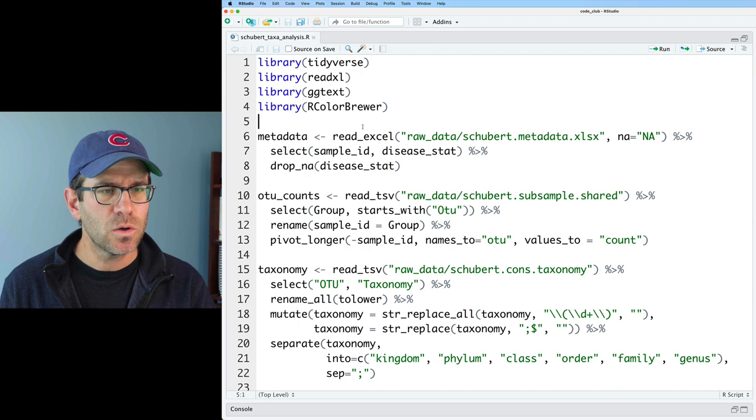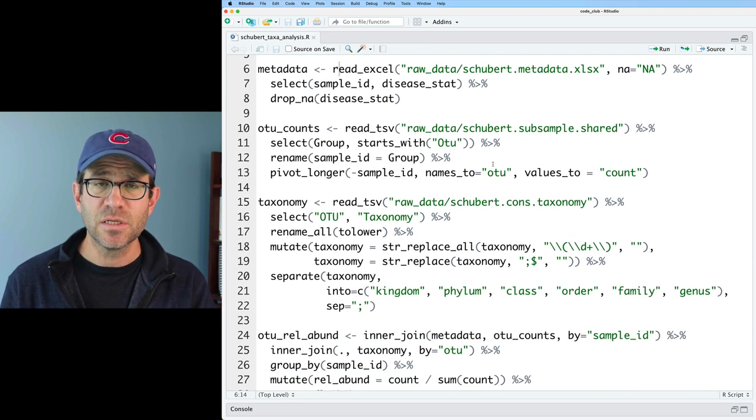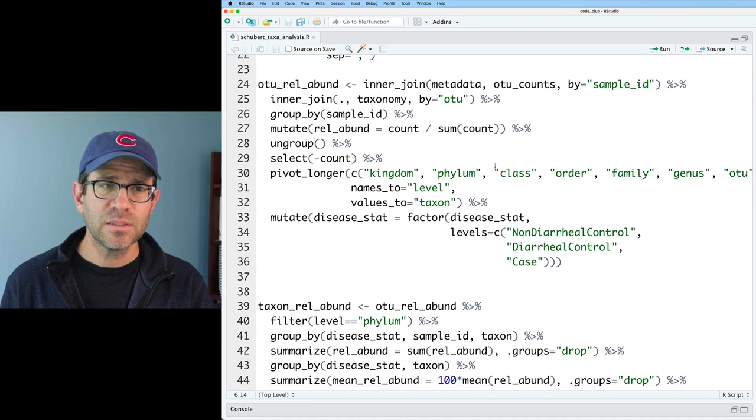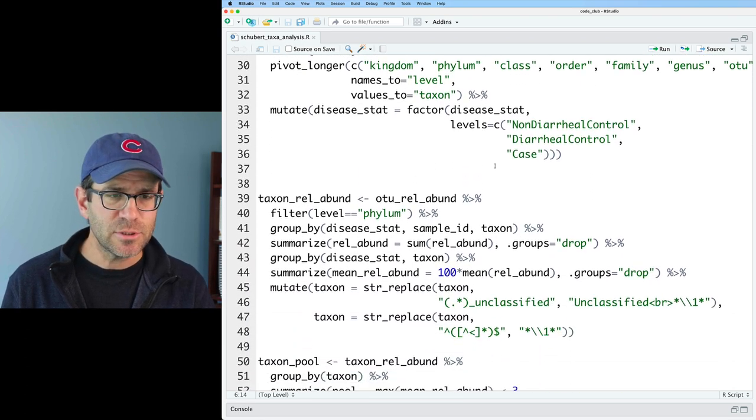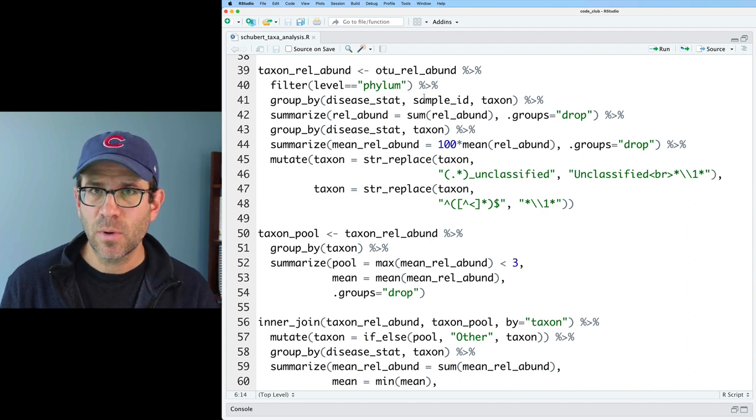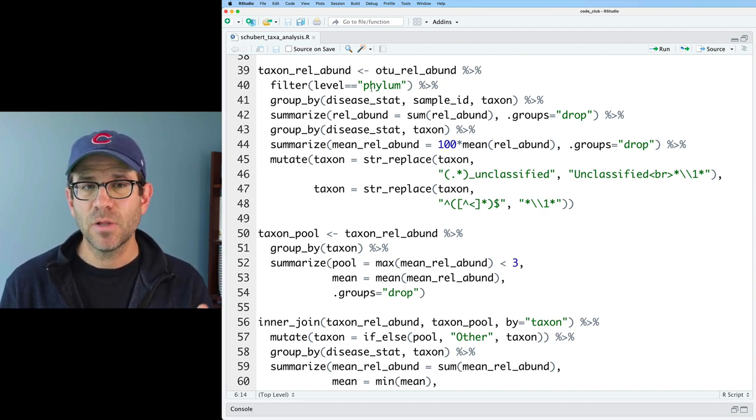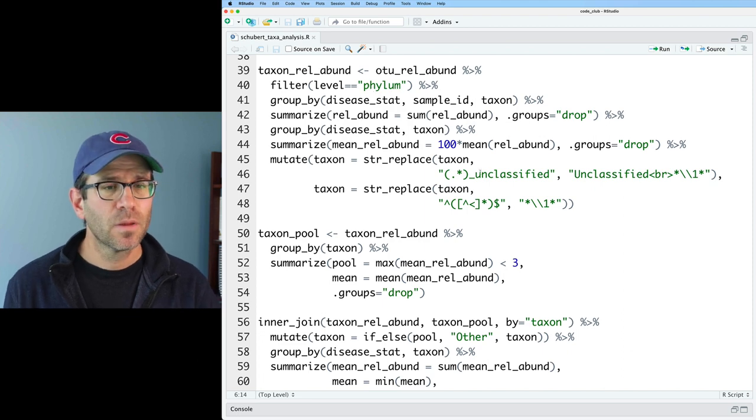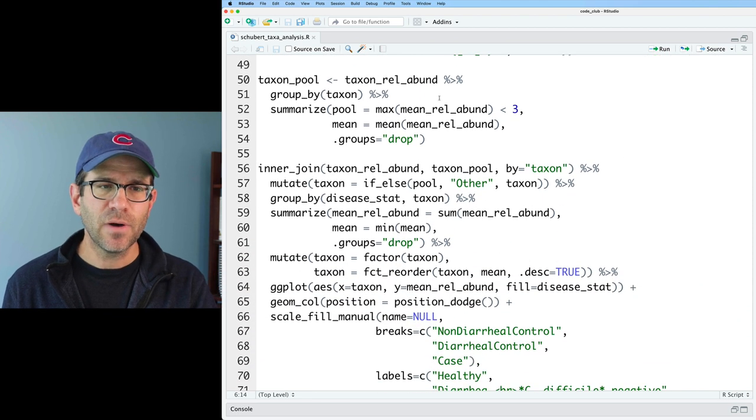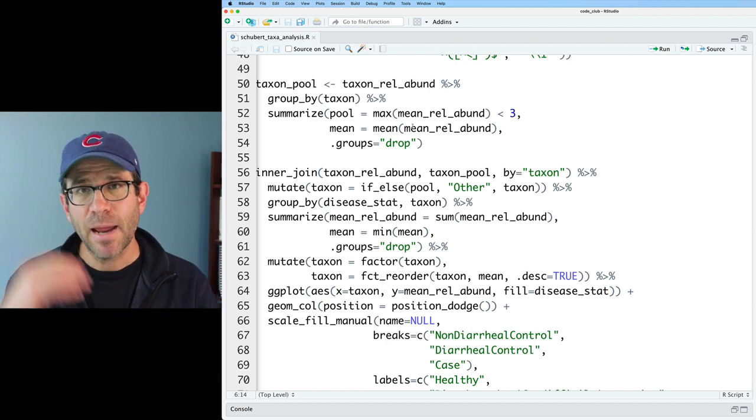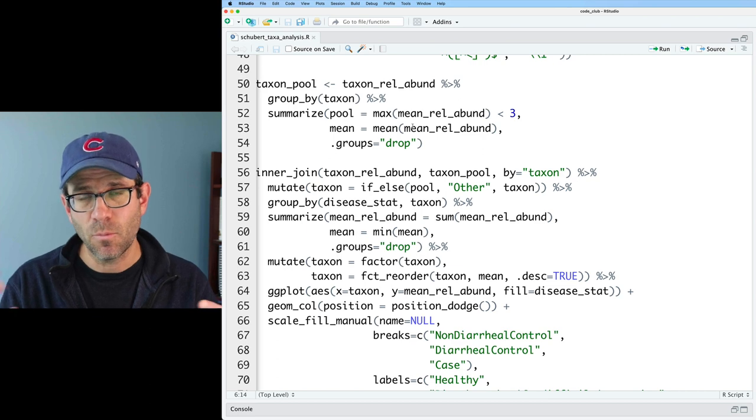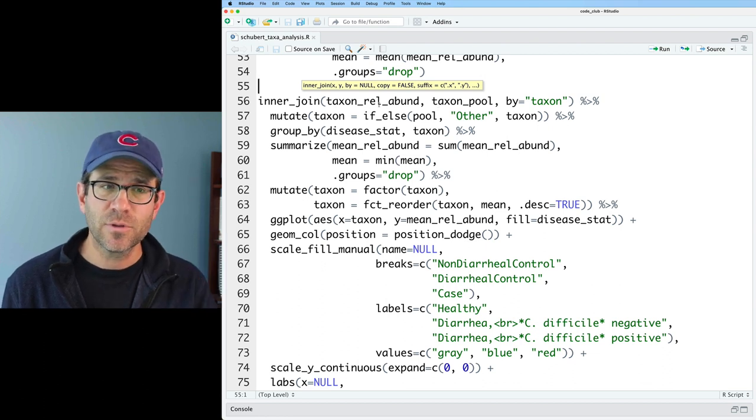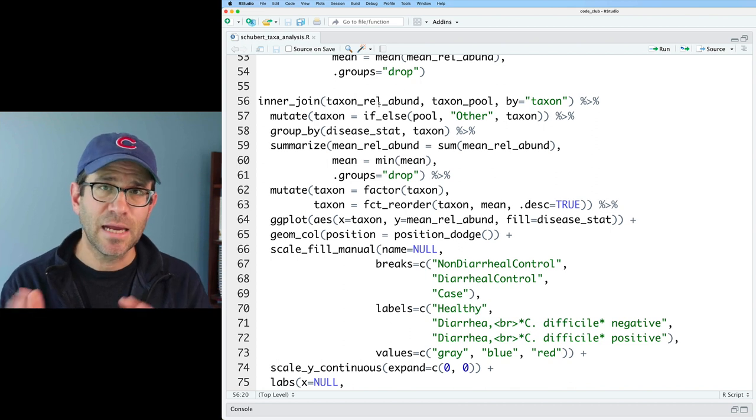So today, we're working through this code. We go ahead and we read in the metadata that tells us the disease status, the OTU data that counts for each OTU, the taxonomy information. We then join this all together and get the relative abundance for each OTU for each subject. We then look at taxon-rela bond as a data frame we're generating, where we're filtering at the phylum level. We're then aggregating together all those OTUs from each subject that belong to each phyla. We get the relative abundance. And then we identify those taxa, those phyla that we can pool, because their maximum abundance on average across all subjects from one disease status group is less than 3%. We then pool those phyla together by joining that taxon pool data frame with our taxon-rela bond data frame. And then we throw it all together to make a side-by-side bar chart.